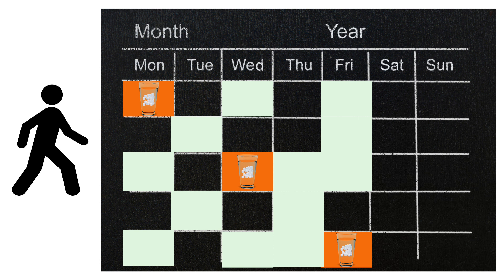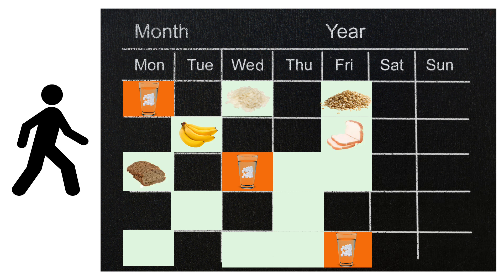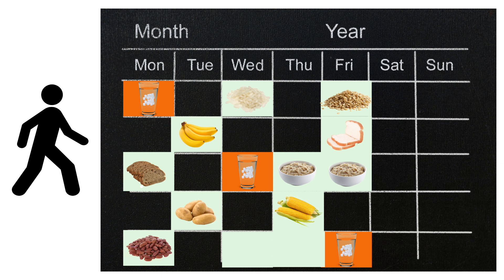On the other occasions, the participant is given 50 grams of available carbohydrates from other foods — for example, white rice, brown rice, bananas, white bread, whole grain bread, oatmeal made from quick oats, oatmeal made from steel-cut oats, potatoes, corn, kidney beans, ice cream, and quinoa. The researchers draw blood repeatedly and calculate the area under the curve for each.